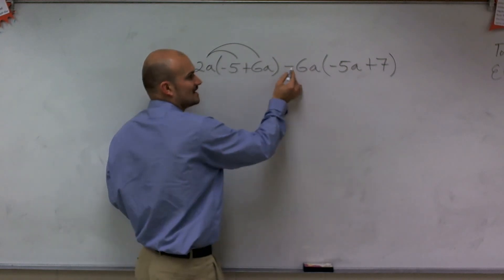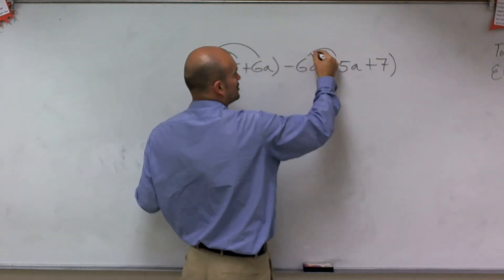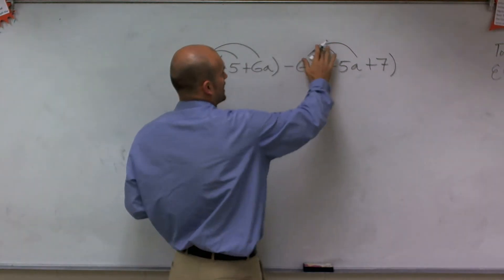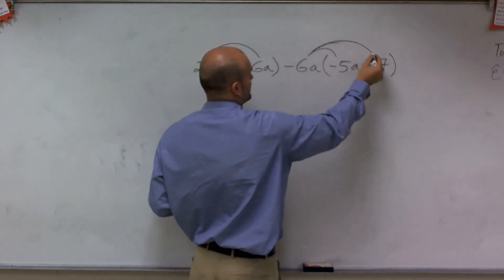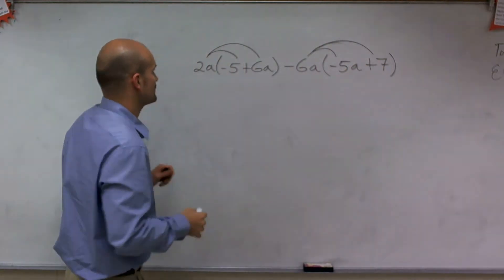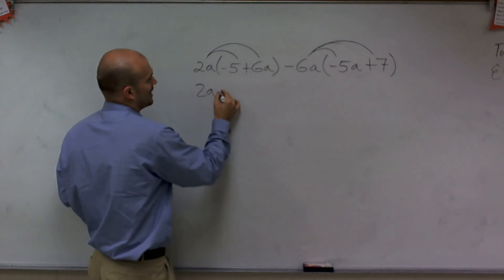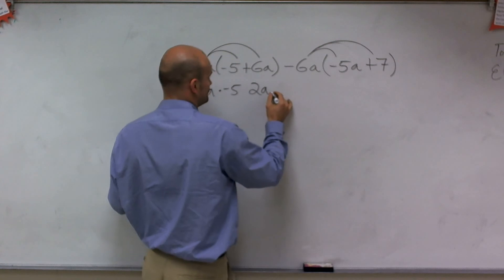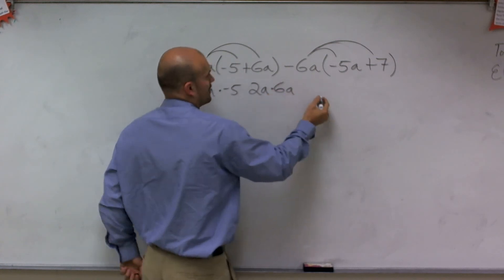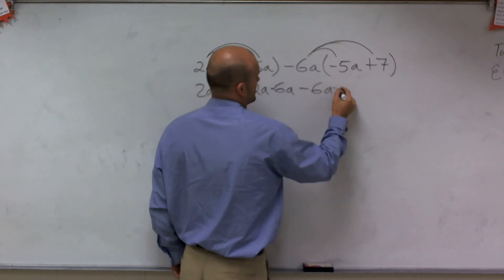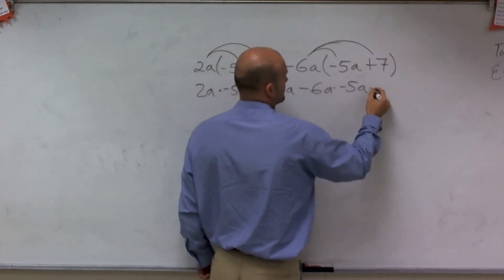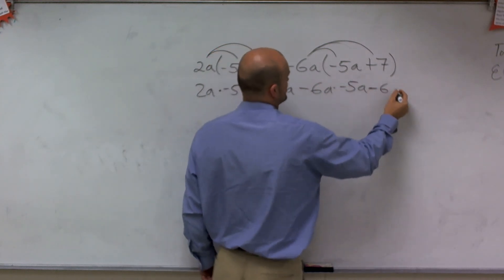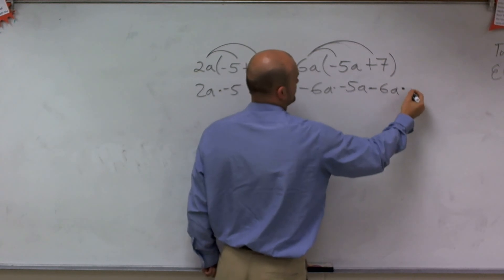Now, notice this 6a is negative. So you've got to make sure when you multiply that, you're multiplying a negative 6a times negative 5a and a negative 6a times 7. So therefore, I obtain 2a times negative 5, 2a times 6a, and then negative 6a times negative 5a, and then negative 6a times 7.